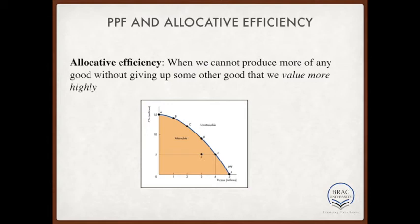However, at the most basic level, to simply put it, allocative efficiency means that the producers supply the quantity of each product that the consumers demand. Note this: only one of the productively efficient choices will be the allocative efficient choice. For example, in order to achieve allocative efficiency, a society with a young population will invest more in education.